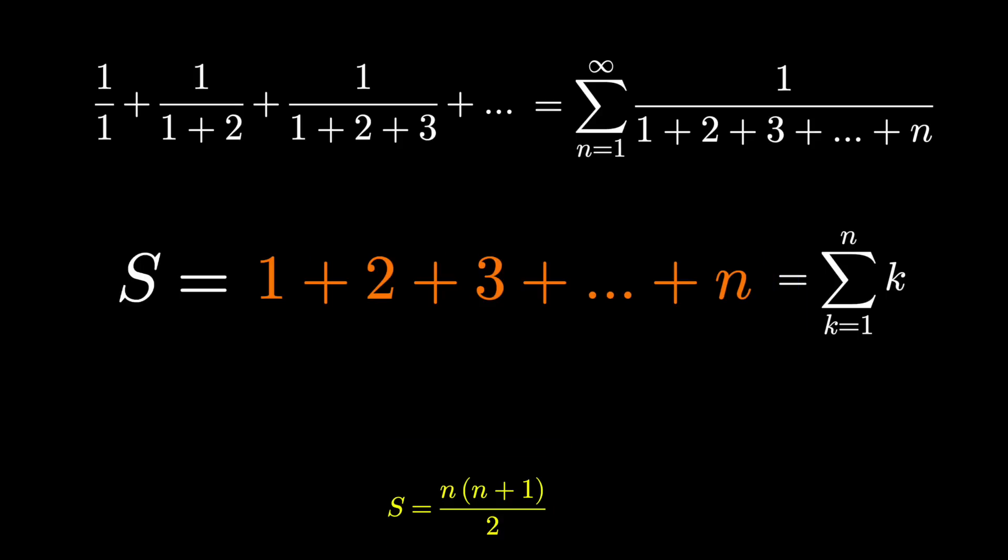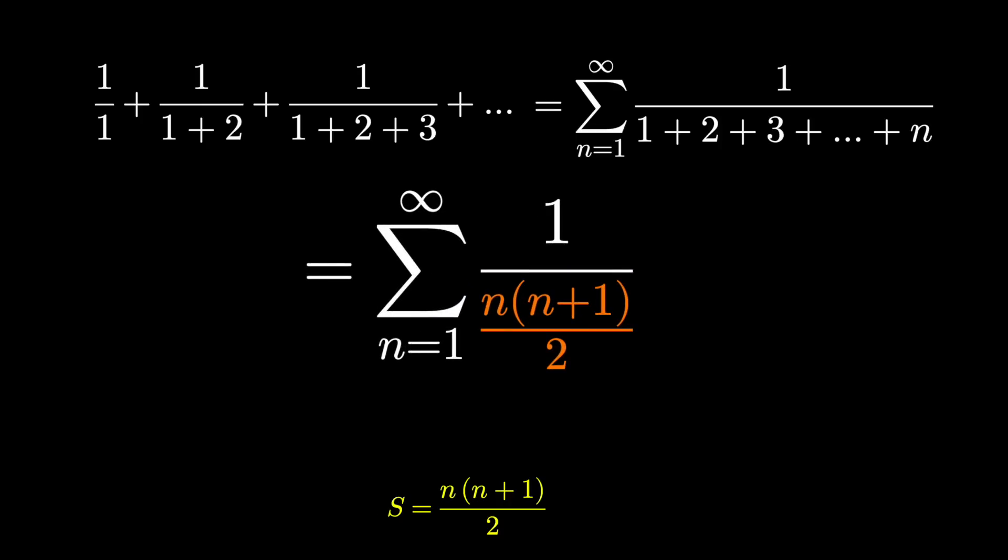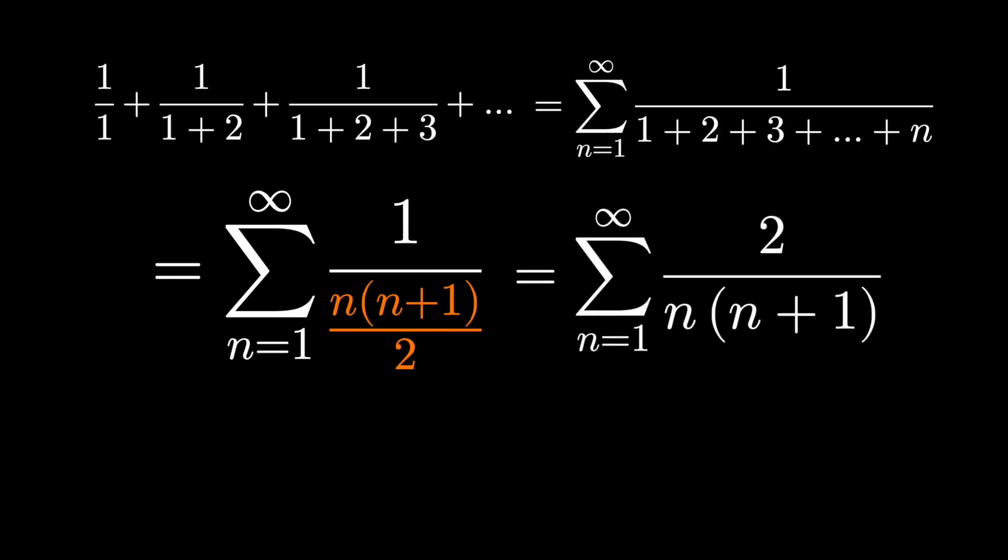So instead of using the summation notation twice, let's just replace it with this formula. So it's 1 over n times n plus 1 over 2, or more simply, we want to calculate the sum from n equals 1 to infinity of 2 over n times n plus 1.